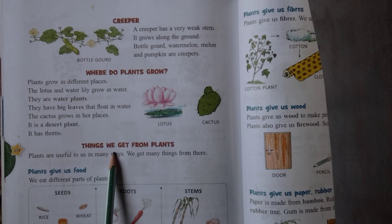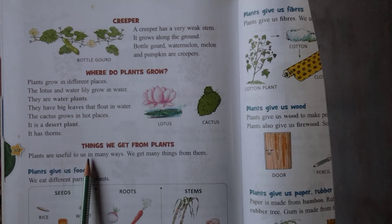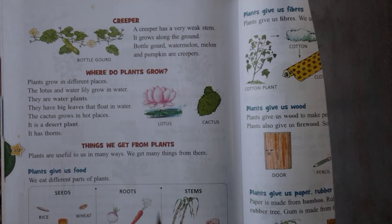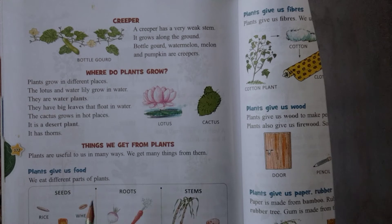The things we get from plants — plants are useful to us in many ways. We get many things from plants. Plants give us food.